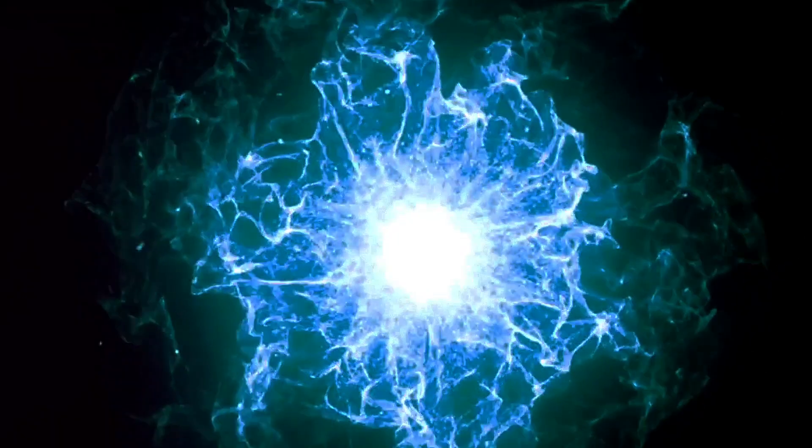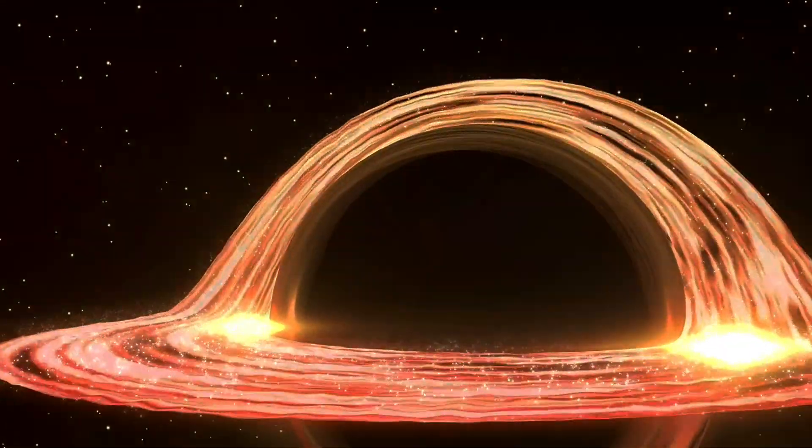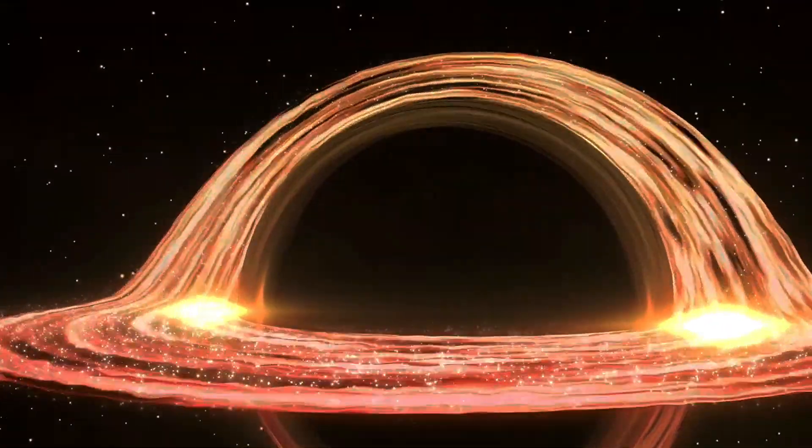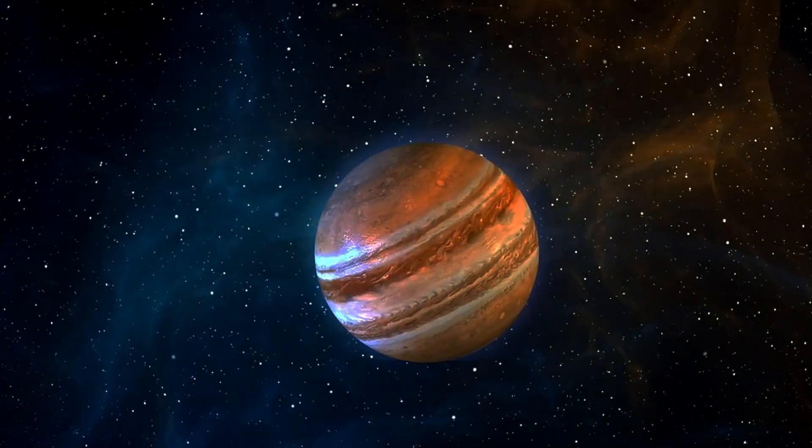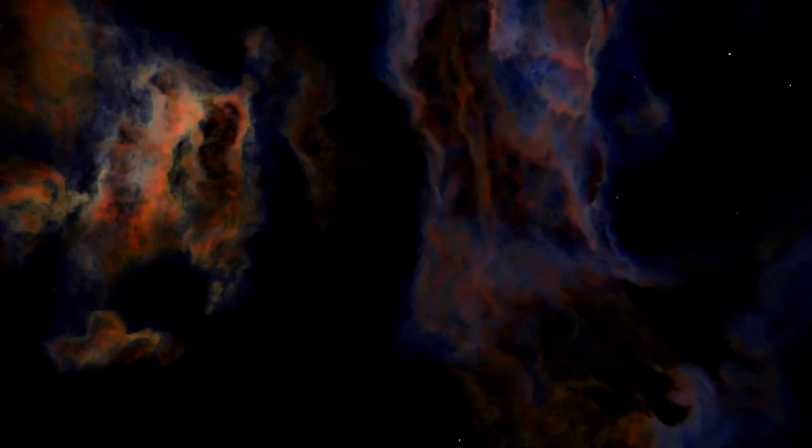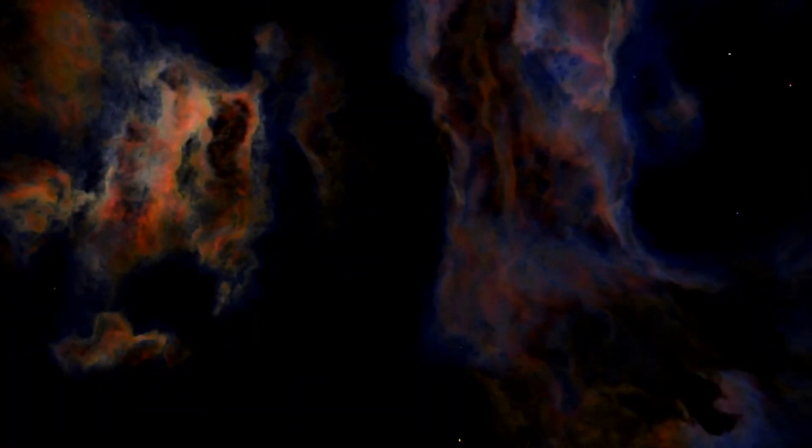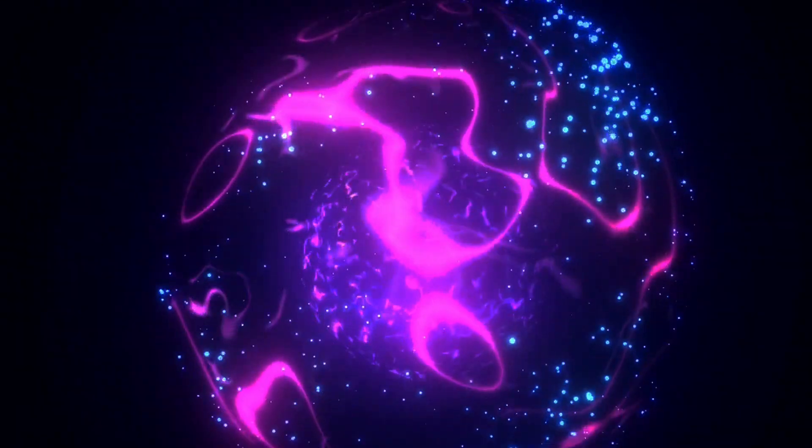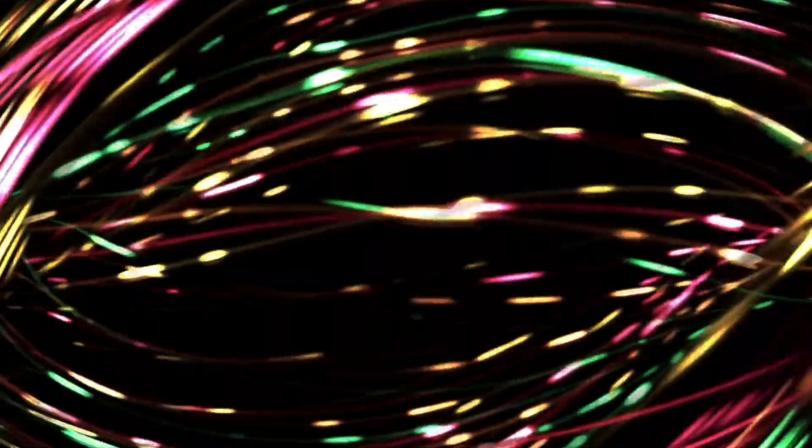But our universe does have gravity. In particular, the presence of not only mass, but all forms of energy will cause the fabric of space-time to curve in a particular fashion. It took Einstein a full decade, from 1905 when Special Relativity was published, until 1915 when General Relativity, which includes gravity, was put forth in its final correct form, to figure out how to incorporate gravity into relativity, relying largely on Riemann's earlier work.